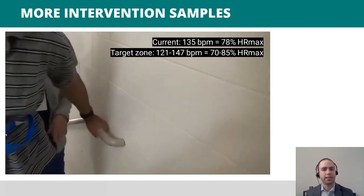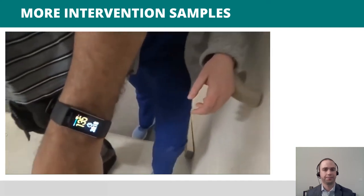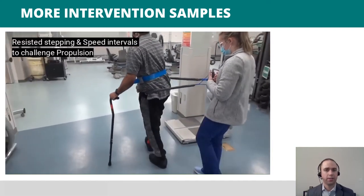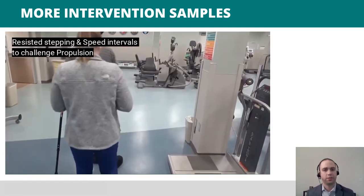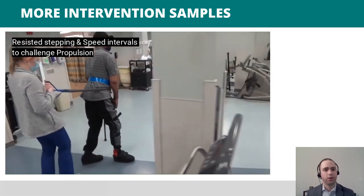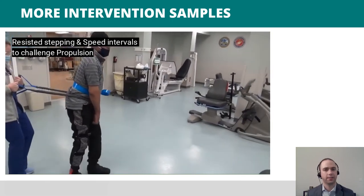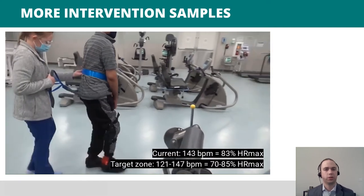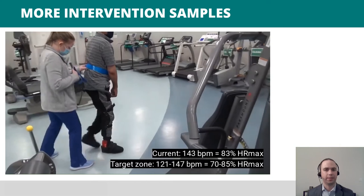Such a device makes it really easy to gauge where the patient's heart rate is in the moment. Using a resistance band, we provide a challenge to propulsion and follow it with intervals of fast walking practice. Throughout all of our gait training, we are monitoring our patient's heart rate response, his subjective reports, and assessing his performance to ensure that we're providing an appropriate level of challenge while keeping him safe.